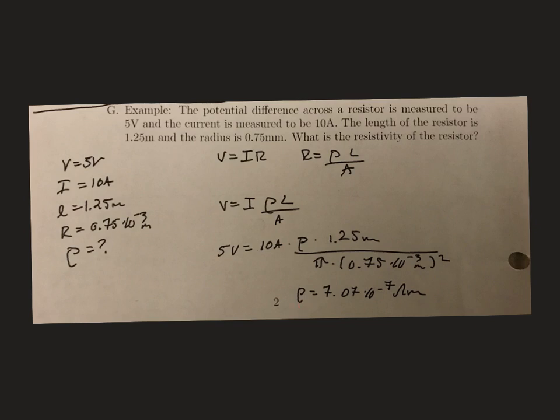That gives me a resistivity of 7.07 times 10 to the minus 7 ohm meters. Please note that resistivity does have units.